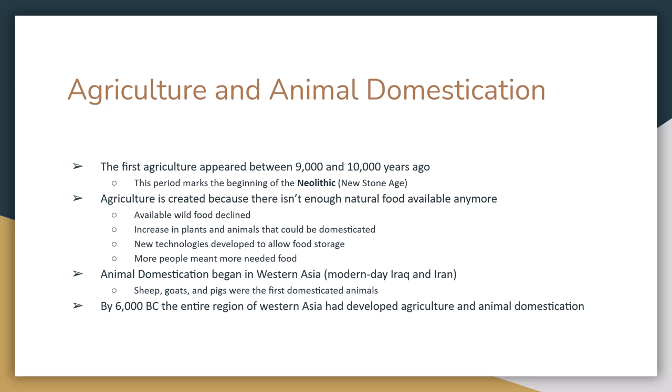Closely related to agriculture is animal domestication. The first animals to be domesticated are sheep, goats, and pigs, and this domestication begins in Western Asia — what we think of today as Iraq and Iran. Once the ideas of agriculture and animal domestication begin, they spread fairly rapidly, and before long the entire Western Asia region is using some form of each, especially in what we know today as Mesopotamia or the Fertile Crescent.